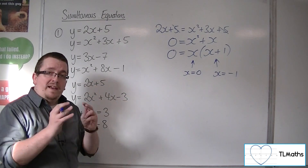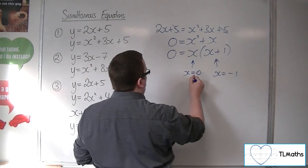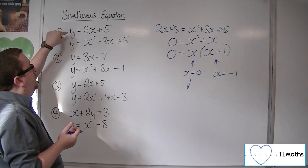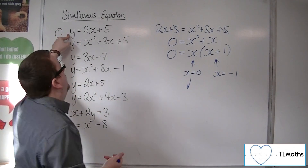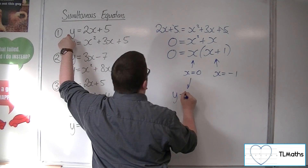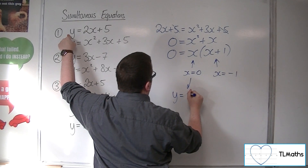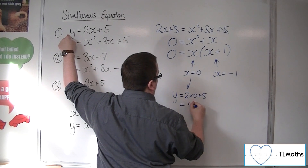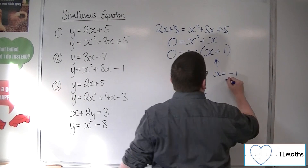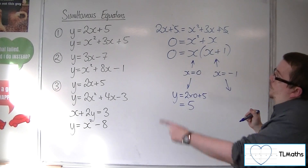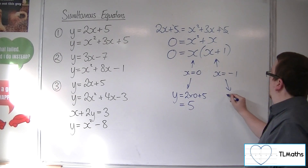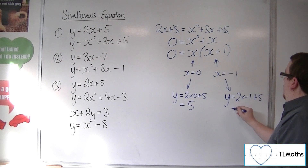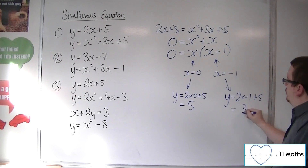To find the respective y values, we need to substitute these into either of the two equations. The first equation is the easiest to work with. When x is 0, y is equal to 2 lots of 0 plus 5, so that's just 5. And when x equals minus 1, we substitute into the first equation: y is equal to 2 lots of minus 1 plus 5, so minus 2 plus 5, which gives 3.